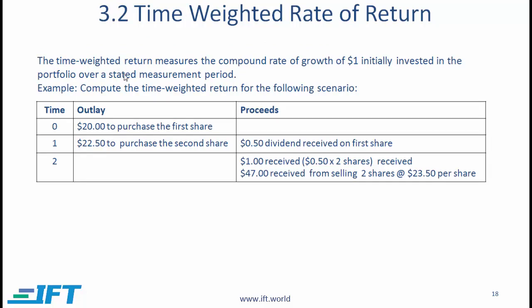Now let's look at the time-weighted rate of return. The time-weighted rate of return measures the compound rate of growth of $1 initially invested in the portfolio over a stated measurement period. We'll take the same example — invest $20, purchase a second share, receive a dividend at the end of year 1, then sell at the end of the second year. The same cash flows, but the calculation will be a little different.